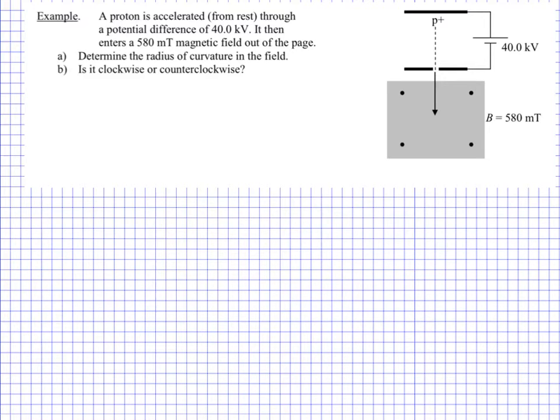So let's take a look at the example. We have a proton, here it is, and it's accelerated from rest. So it has negligible kinetic energy at this point. And then it's accelerated as a result of this potential difference here of 40,000 volts. So it's going to be accelerated from this plate to this plate, and then at this plate there's a little hole which allows the proton to pass through the gap rather than just smashing into the plate. And so it passes through the gap. At this point it enters a magnetic field, which is represented by these dots, and the magnitude of that field is 580 milliteslas. We need to determine the radius of curvature in the field and whether this curvature is clockwise or counterclockwise.